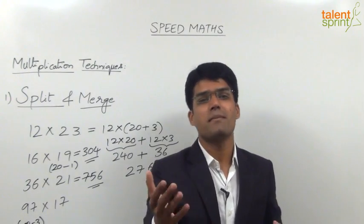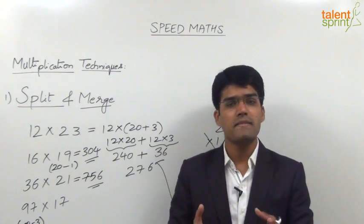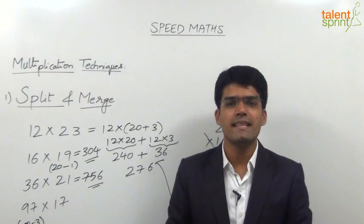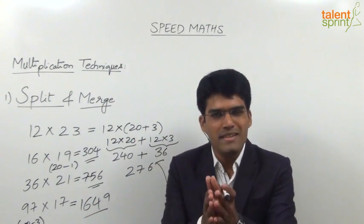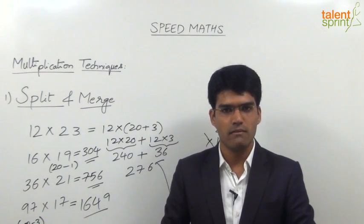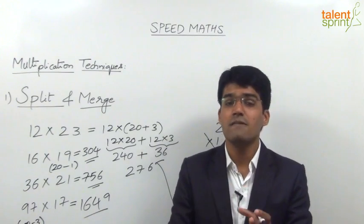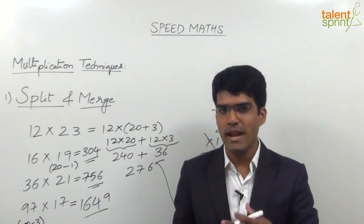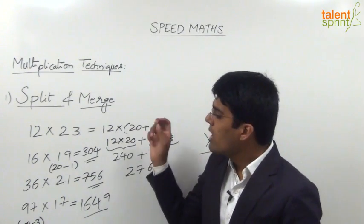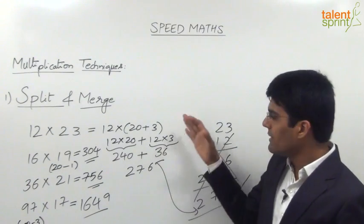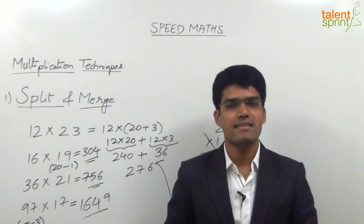So from 1700 we subtract 51, because we are giving those 3 times back. If you are comfortable, directly say 1700 minus 51 equals 1649. Otherwise, break 51 as 50 plus 1: 1700 minus 50 is 1650, and 1650 minus 1 is 1649. This is how simple calculations can be kept simple — get the answer without writing any steps. Practice well on this technique of split and merge and get required answers as quickly as possible.